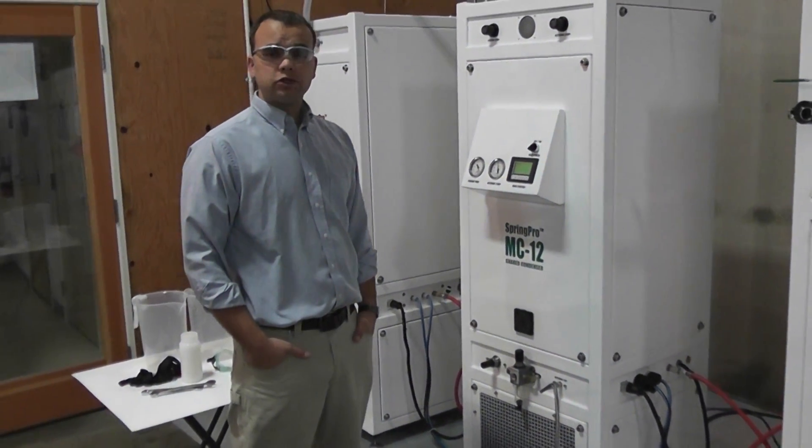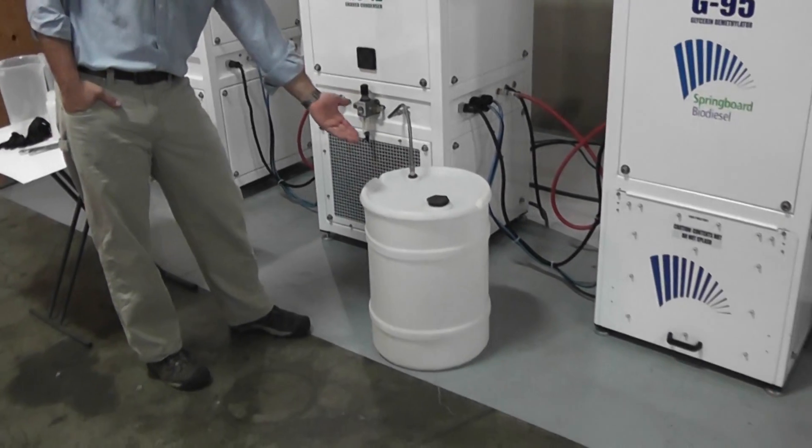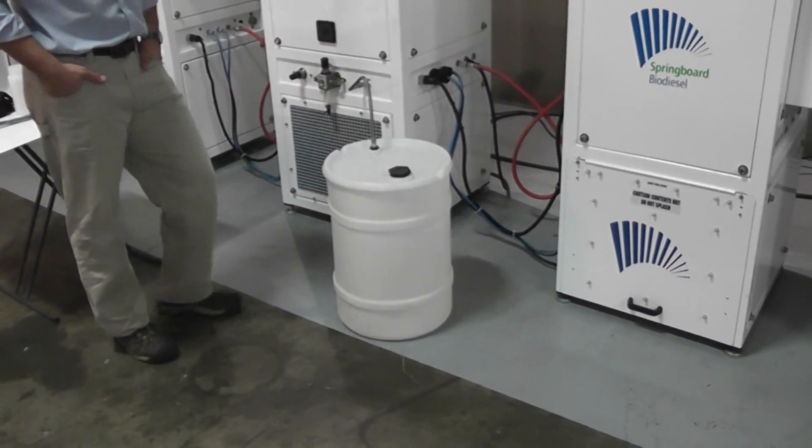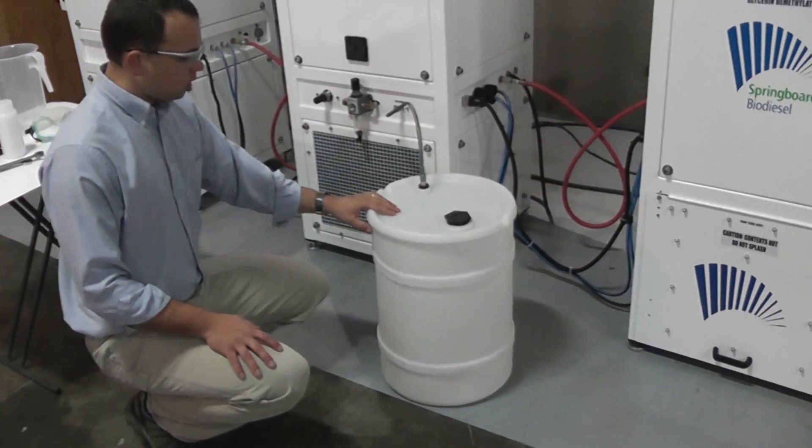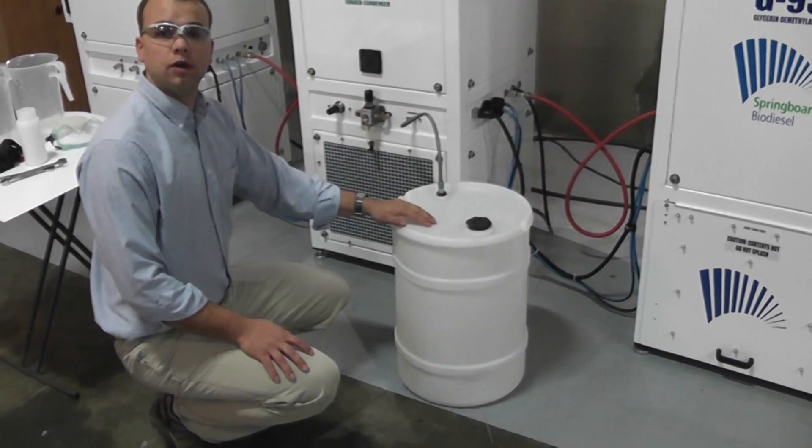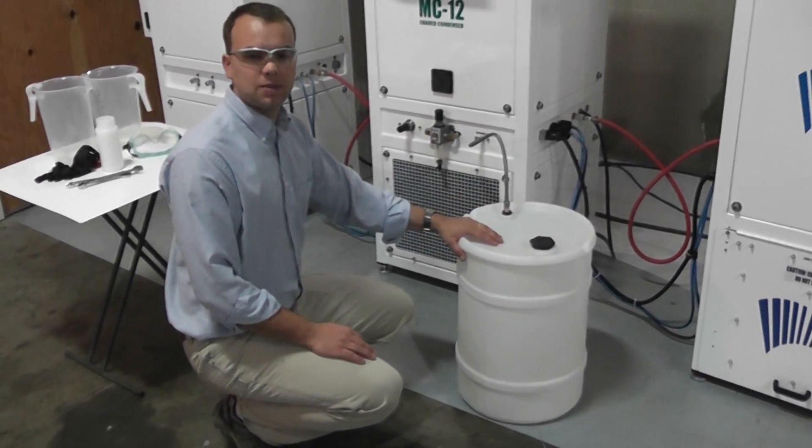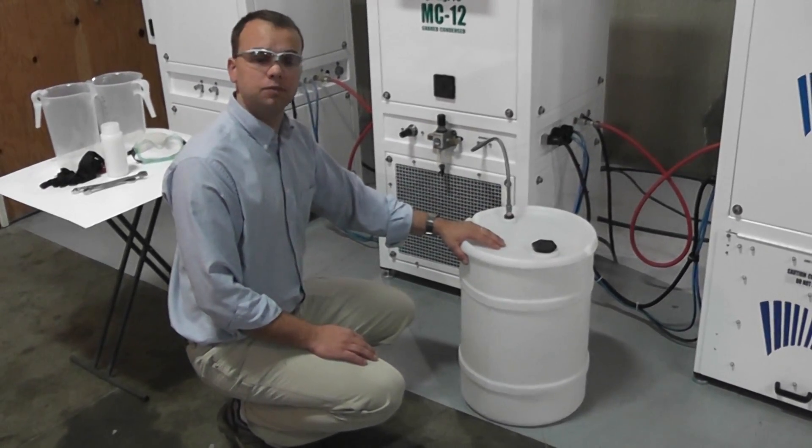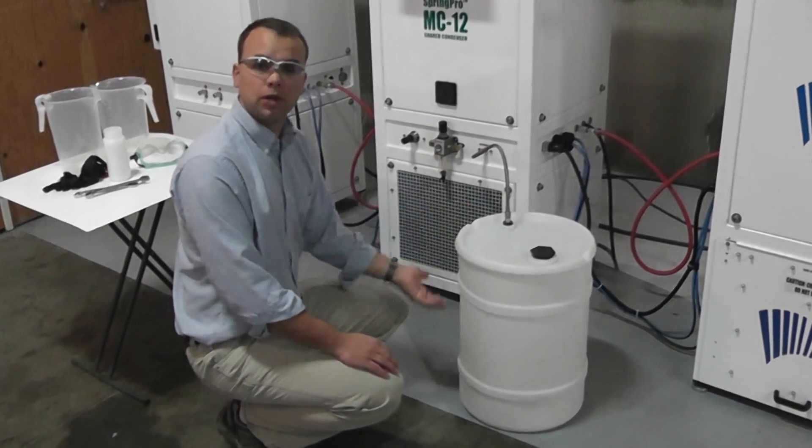Something very important before you start the demethylation process is to make sure you have somewhere for the methanol to go that's extracted from the glycerin. What we've got here is about a 15-gallon drum, which is plenty of capacity for 25 gallons of glycerin. Out of 25 gallons of glycerin, you'll typically get less than 10 gallons of methanol. So we should have plenty of capacity. We've emptied it already, so we've got plenty of room.